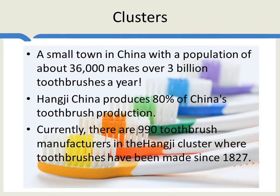There's a small town in China with a population of just 36,000 that makes over 3 billion toothbrushes a year. Hangji, China produces 80% of China's toothbrush production. There are over 990 manufacturers in the Hangji cluster, and toothbrushes have been made there since 1827. That's another interesting fact about these clusters: once they start, they tend to remain in place for a long time. They're very stable.